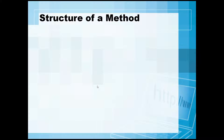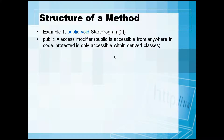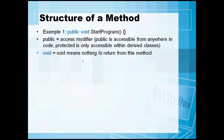Here is the structure of a method. Example one: 'public void StartProgram()' — it always has open and close brackets and curly brackets. 'public' is again the access modifier, meaning it can be accessed from anywhere within your code. You can also change the modifier to protected or private, which is only accessible within derived classes. 'void' means that nothing is going to be returned from this method.